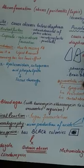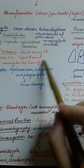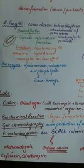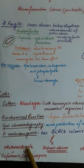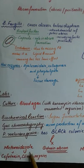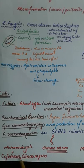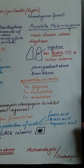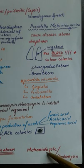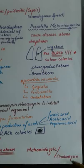Treatment against these organisms begins with draining the abscess in both cases. For B. fragilis, metronidazole is given — it is effective against anaerobic infections — and can be combined with cefoxitin or clindamycin. For Prevotella melanogenica, either metronidazole or clindamycin is used to eradicate the anaerobic organism.